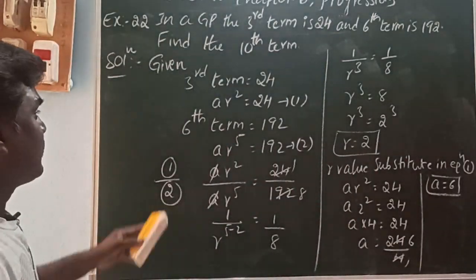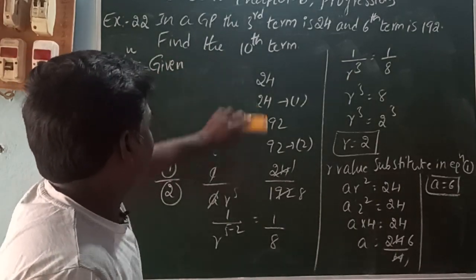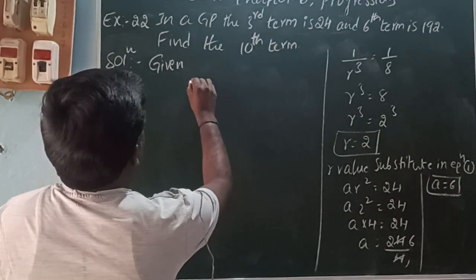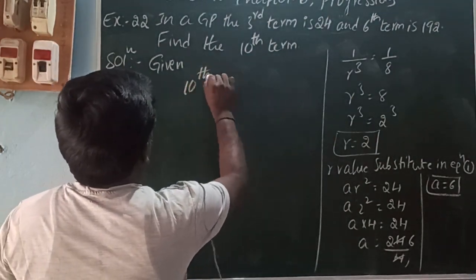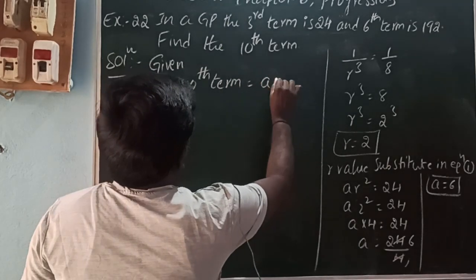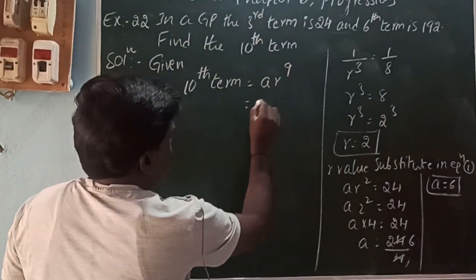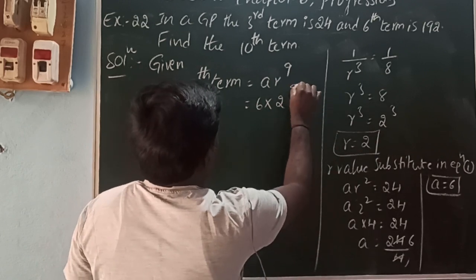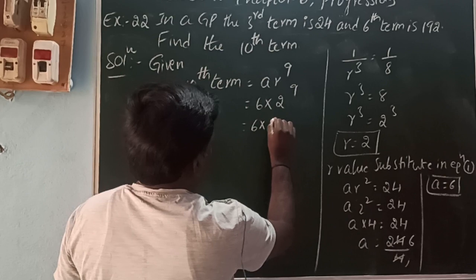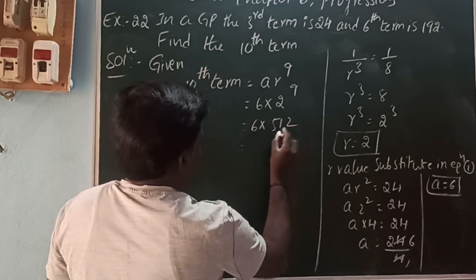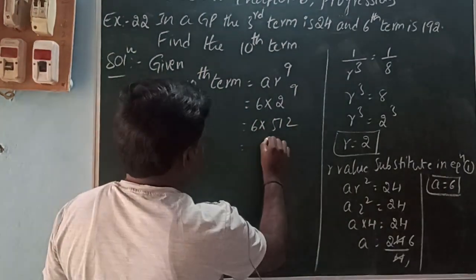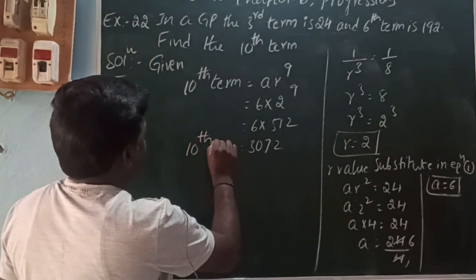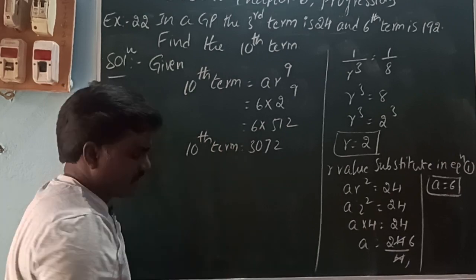So what they are asking is to find the 10th term. The general form of the 10th term of a GP is a·r^9. The 10th term is equal to 6 into 2^9. Since 2^9 = 512, that is 6 × 512 = 3072. The 10th term of the GP is 3072.